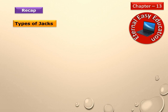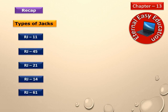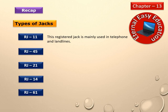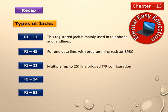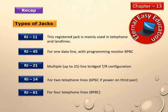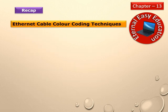Recap: Types of Jacks — RJ11, RJ45, RJ21, RJ14, and RJ61. RJ11 is mainly used in telephones and landlines. RJ45 is for one data line, with an 8-pin 8-connector configuration. RJ21 supports multiple lines with up to 25-line bridged configuration. RJ14 is for 2 telephone lines with 6-pin 6-contact. RJ61 is for 4 telephone lines with 8-pin 8-contact modular connection.